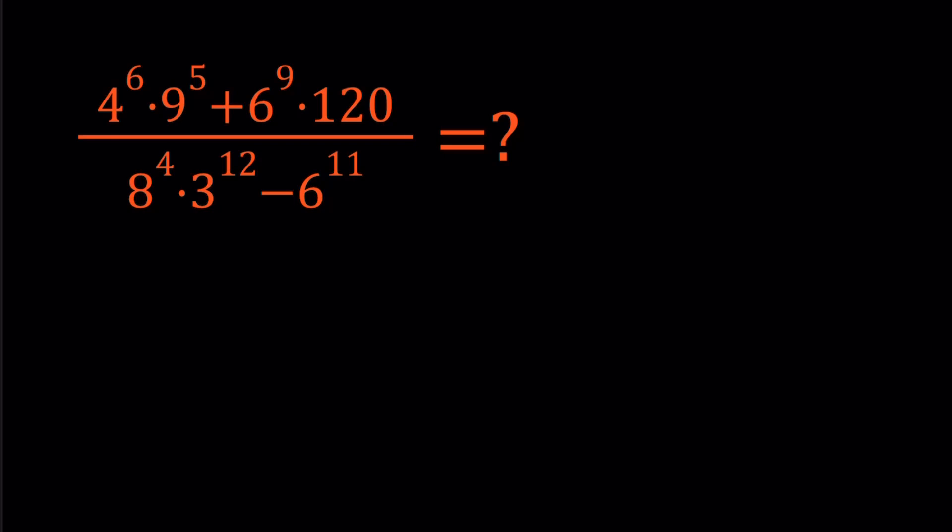We have 4 to the 6th power times 9 to the 5th power plus 6 to the 9th power times 120, all of that divided by 8 to the 4th power times 3 to the power 12 minus 6 to the 11th power.